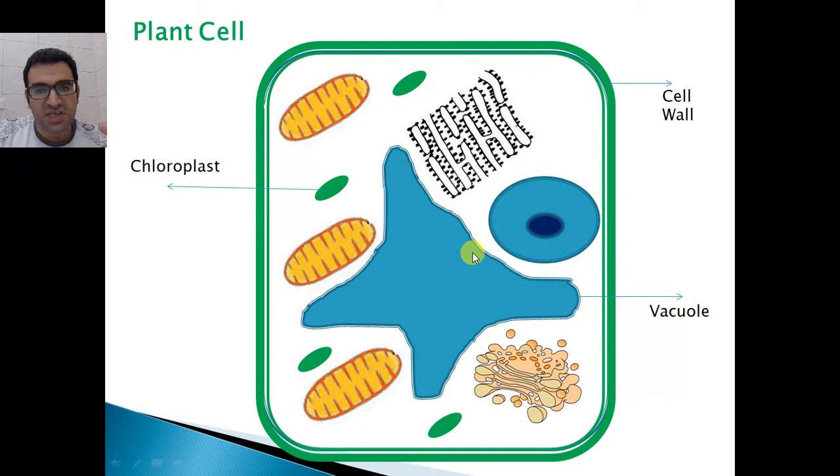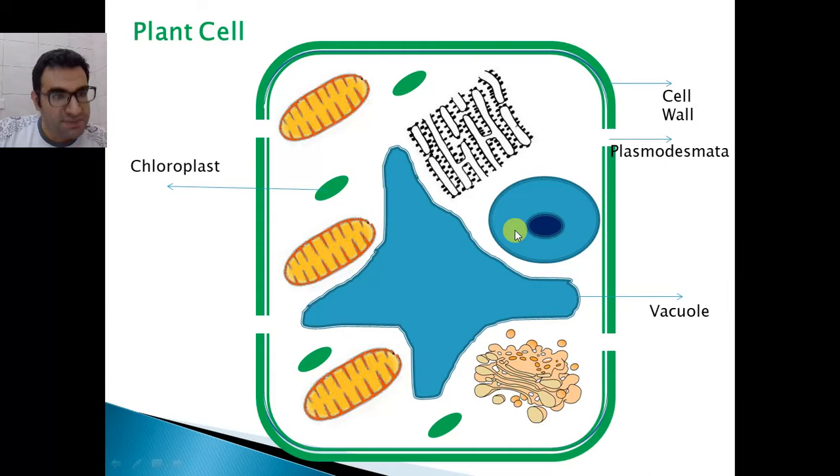Also, within the cell wall, we have openings here - pores. Those openings are called the plasmodesmata, and they allow for exchange of materials between one cell and another cell. For example, if a hormone, let's say auxin, which is a hormone made by plants, needs to pass from one cell to another, it will pass through this channel, the plasmodesmata.